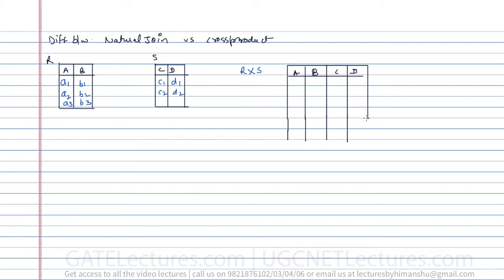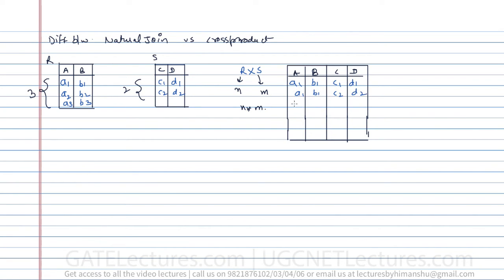It will contain six tuples because if R has n tuples and S has m tuples, then R cross S contains n×m tuples. Here R has three tuples and S has two, so 3×2 = 6. The resulting values are: (a1,b1,c1,d1), (a1,b1,c2,d2), (a2,b2,c1,d1), (a2,b2,c2,d2), (a3,b3,c1,d1), (a3,b3,c2,d2) — every tuple is combined with all others.